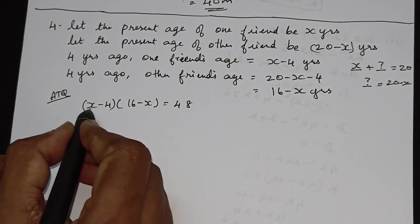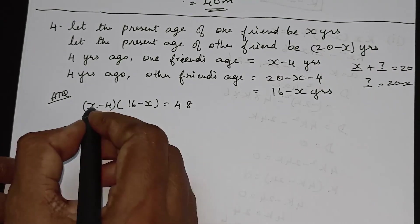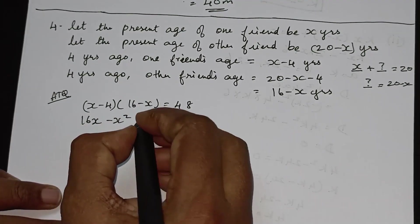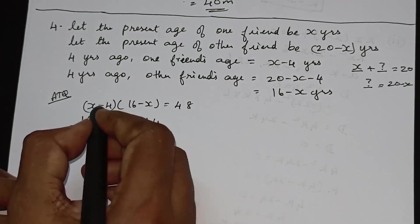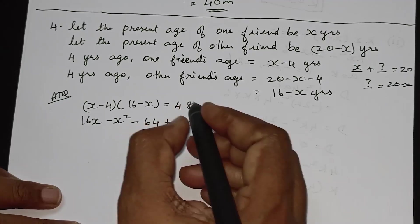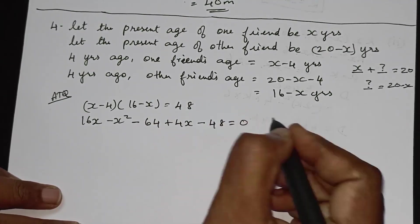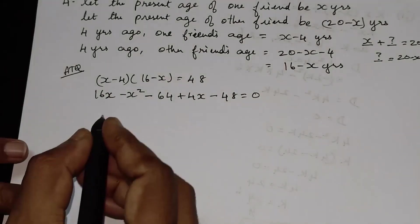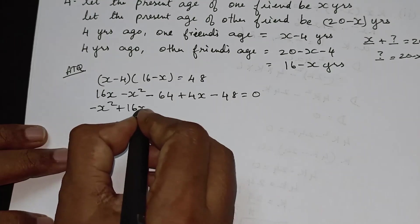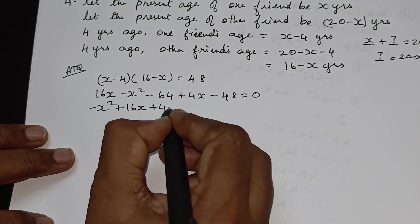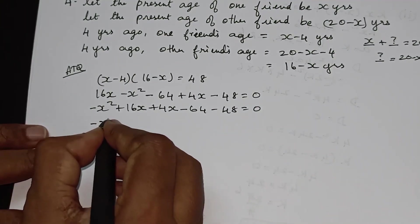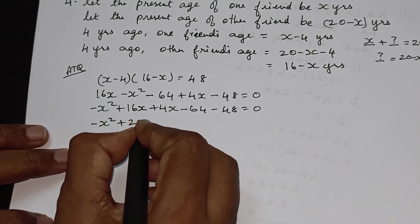Now we multiply this out: x into 16 is 16x, x into −x is −x², −4 into 16 is −64, −4 into −x is +4x. So we get −x² + 16x + 4x − 64 minus 48 is equal to 0, giving −x² + 20x − 112 is equal to 0.